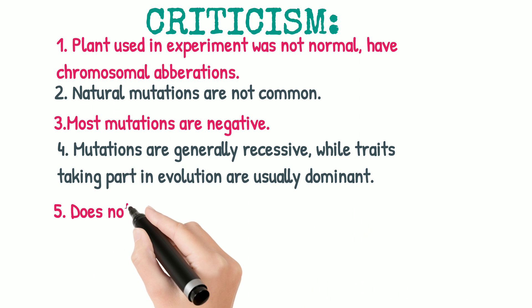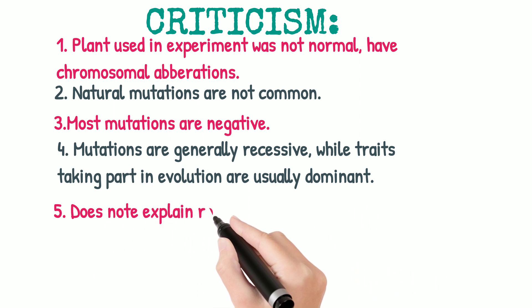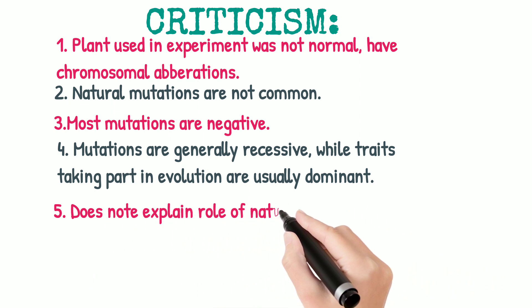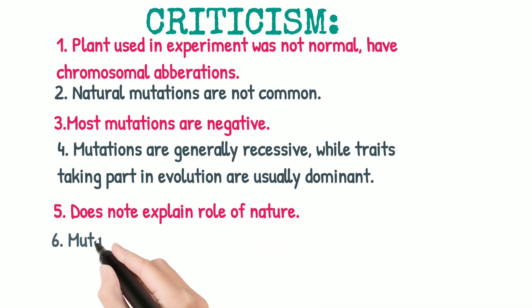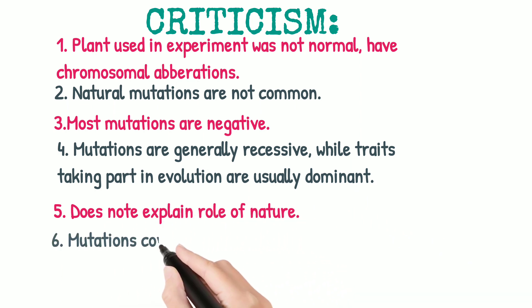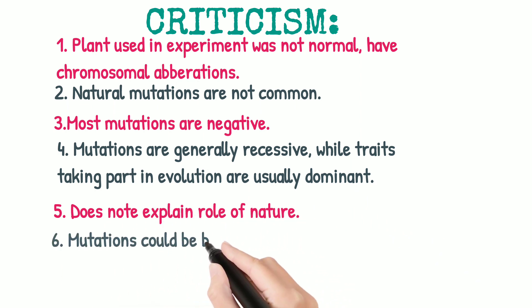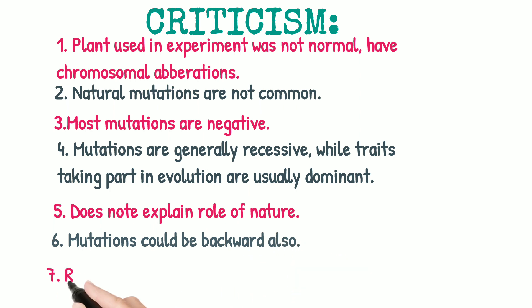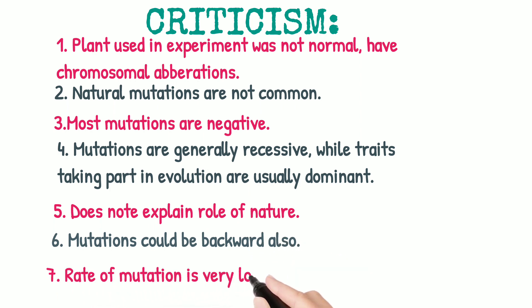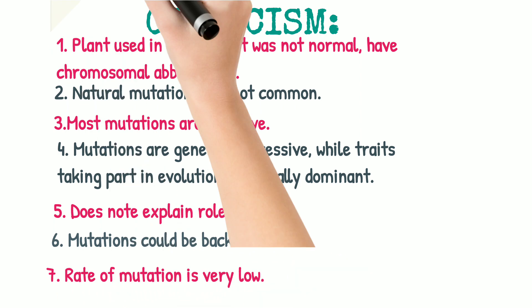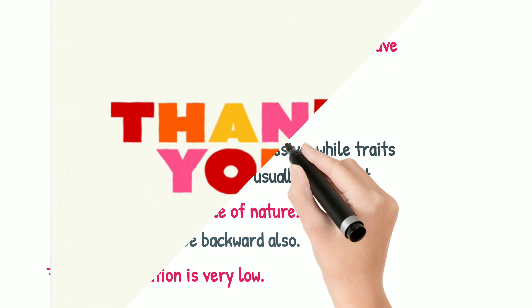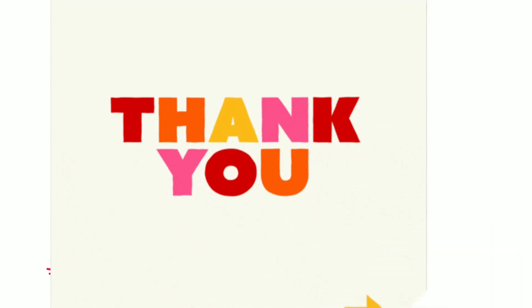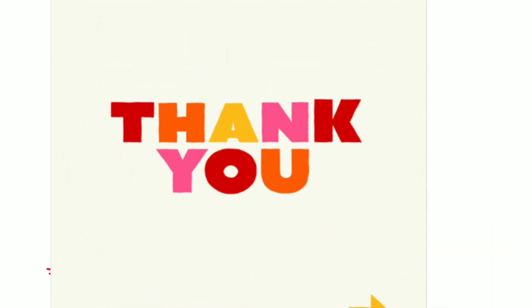Fifth, it does not explain the role of nature. Sixth, mutation could be backward also — from different plants to normal. Seventh, the rate of mutation is very low, that is 1 out of a million. Hope you understand the basic concept of the Mutation Theory of Evolution. Thank you for listening.